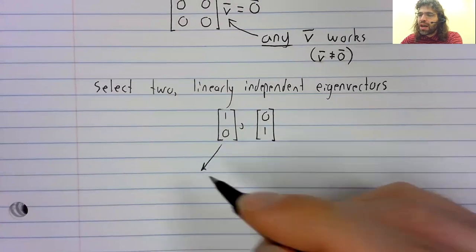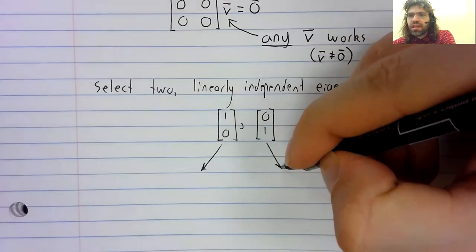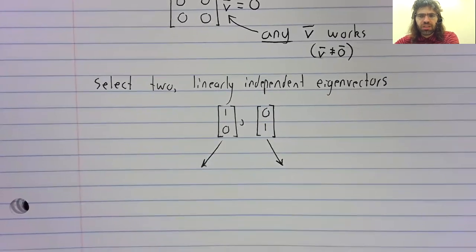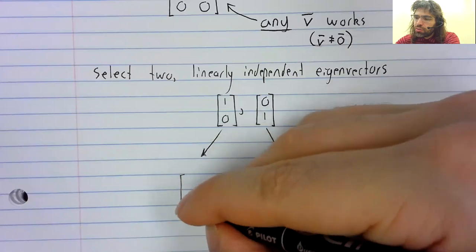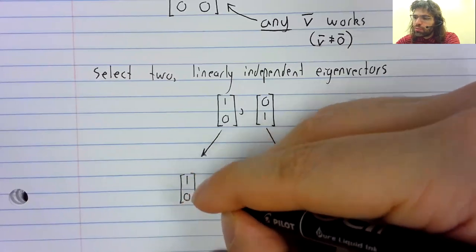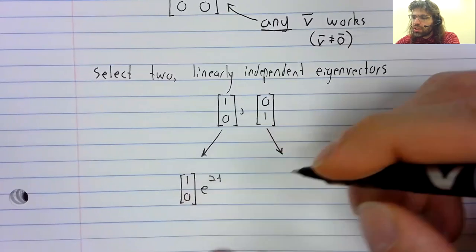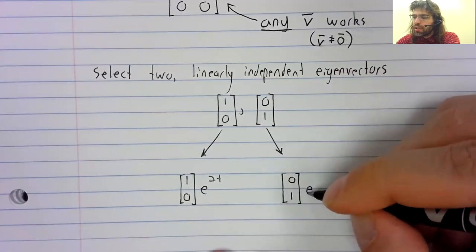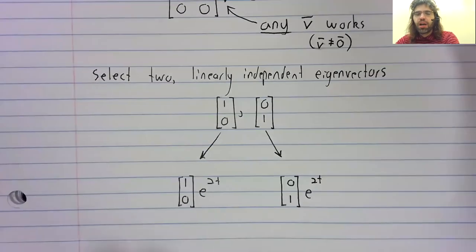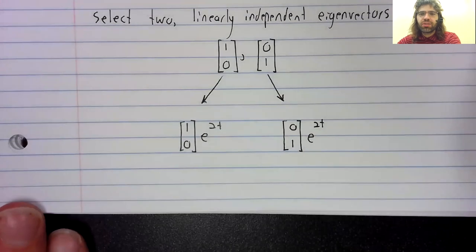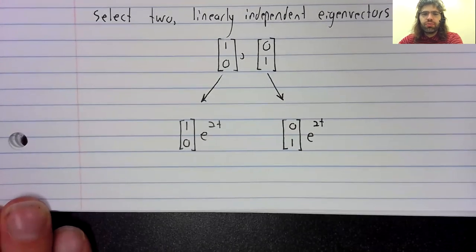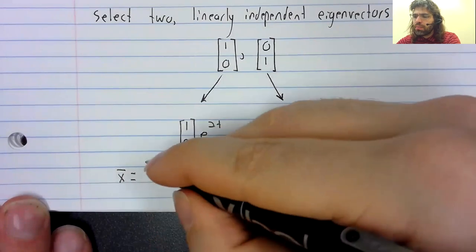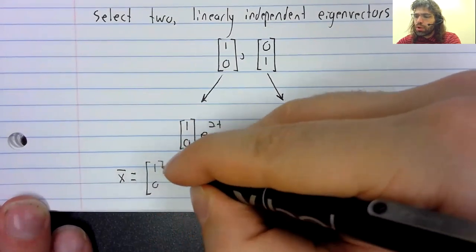Linearly independent eigenvectors give linearly independent solutions. That's an important thing to know. So the solutions [1,0]e^(2t) and [0,1]e^(2t) are linearly independent. Since we have two linearly independent solutions, we can form a general solution.